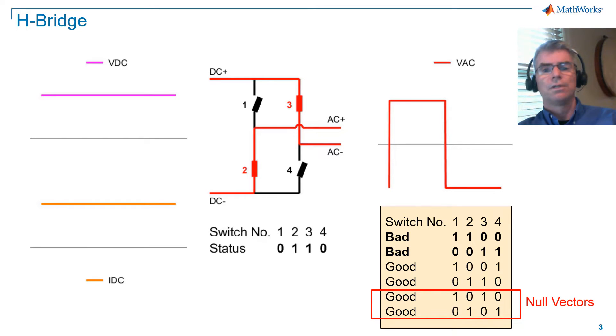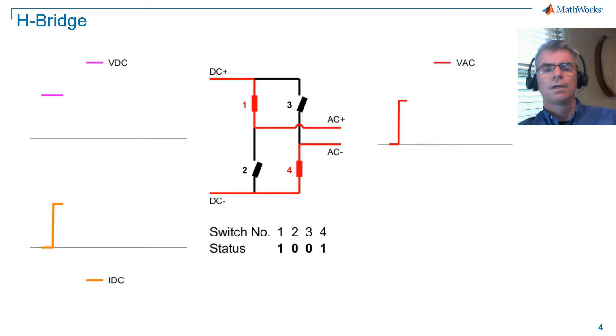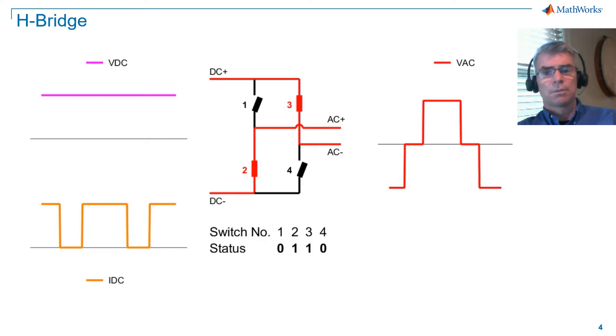They are the so-called null vectors, where we turn on switches 1 and 3 together, or switches 2 and 4 together. Let's take a look at why null vectors are useful. Null vectors will set AC voltage to 0. You can see that when we do this, that the AC voltage is a little closer to a sinusoidal shape than our previous waveform, as we now have three states to choose from, plus VDC, 0, and minus VDC.